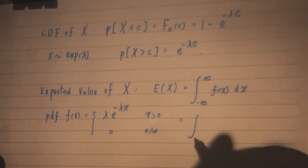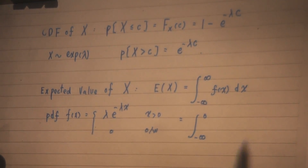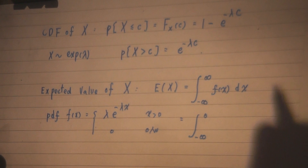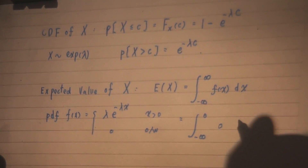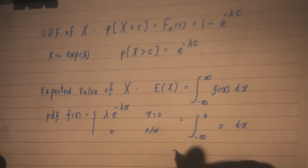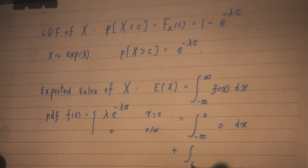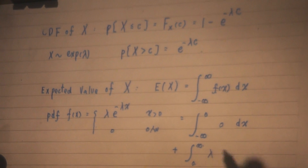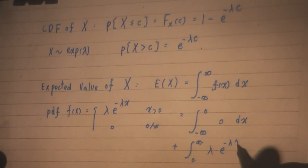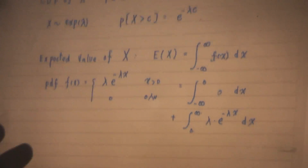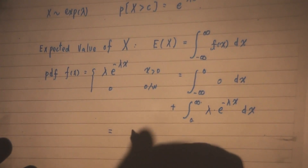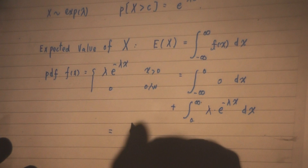This I can write as from negative infinity to 0 — from negative infinity to 0, the f of x function is 0, so you put 0 here. Then plus integration from 0 to positive infinity. When x is greater than 0, f of x is lambda times e to the power of minus lambda x, and you put dx here. From calculus, you can find the outcome is 1 over lambda.